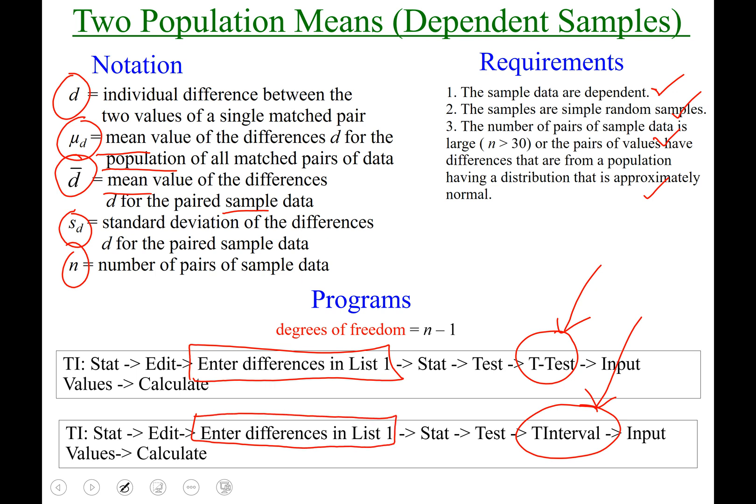List one, for example, and that list will just have the differences. It's not going to have all of the befores and all of the afters, or all of the husband's values and all of the wife's values. It's just going to have the differences in those two populations, therefore creating one population of its own, which is why you see T-Test and T-Interval without the number 2 in front. It's a little tricky, so heads up for that.